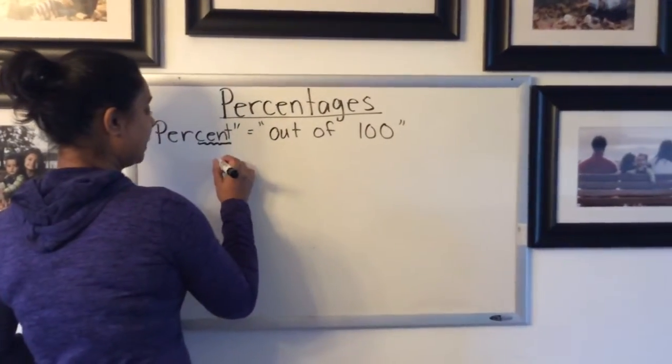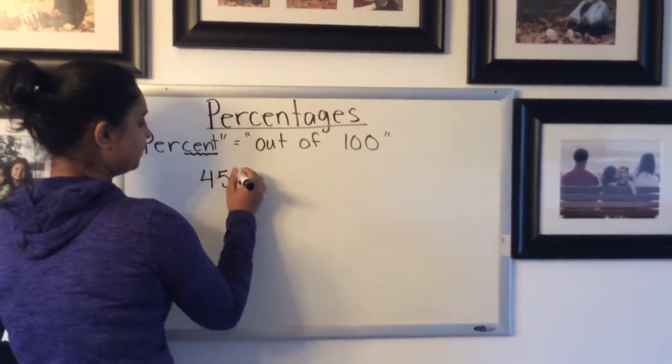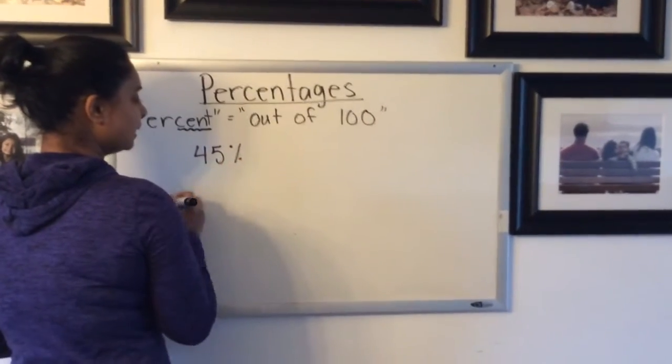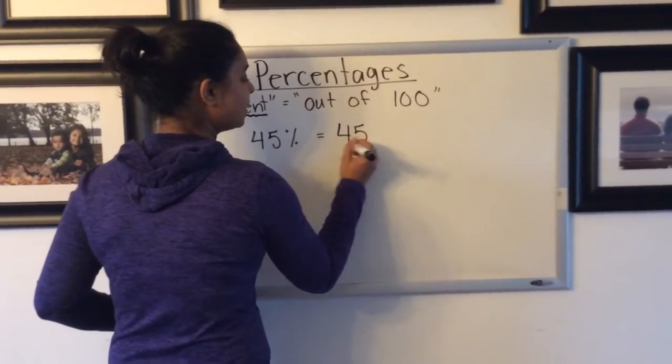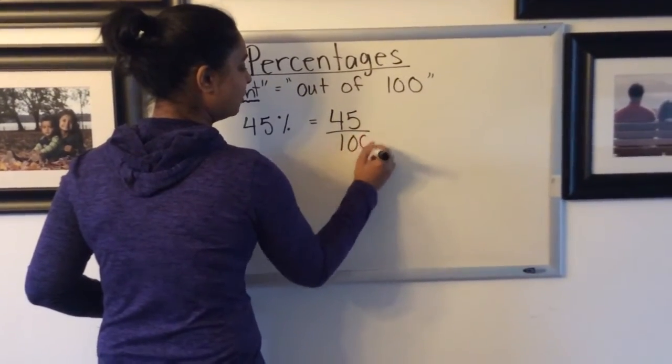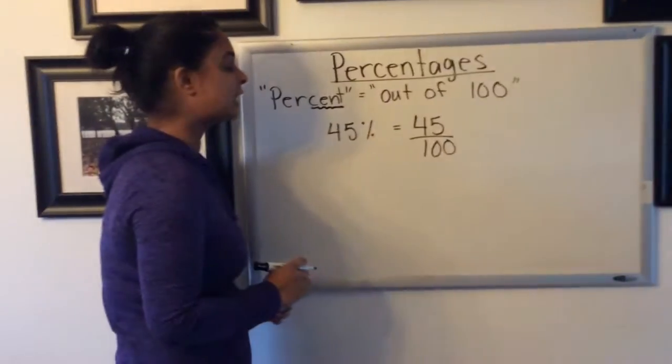So if you have a percentage such as 45%, then we know that means 45 out of 100. That would be a little less than half.